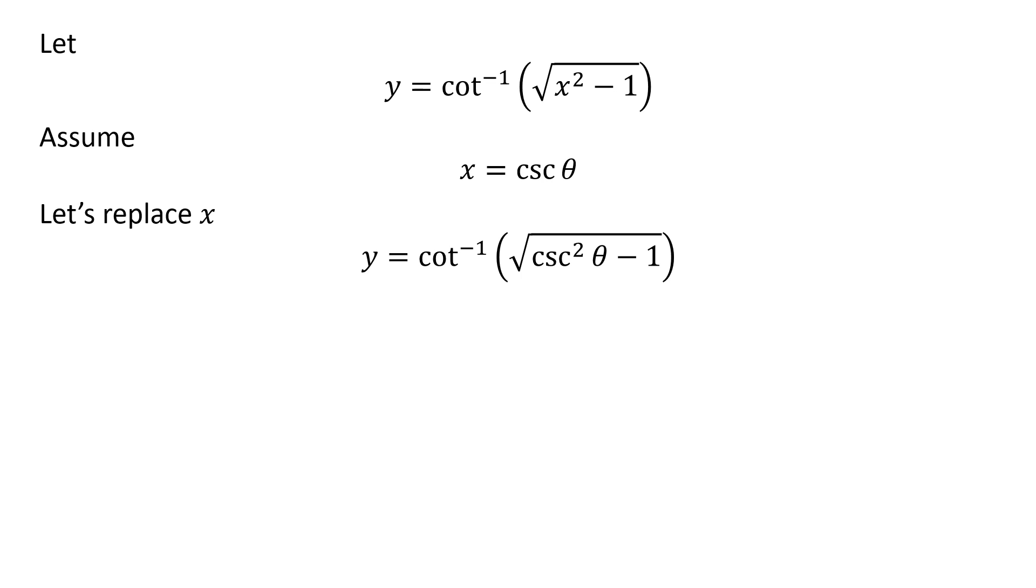Replacing x by our assumed value in y gives us y is equal to inverse of cotangent of square root of square of cosecant of theta minus 1.